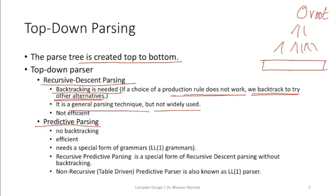In predictive parsing, there is no backtracking, so it is efficient — it will do the task faster. It needs a special form of grammar called LL(1) grammar. If you are asked what kind of parsing technique LL(1) is, your answer should be predictive parsing technique. LL(1) is nothing but a predictive parsing technique.